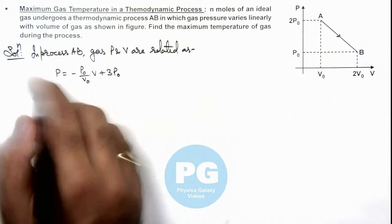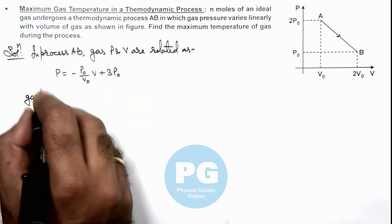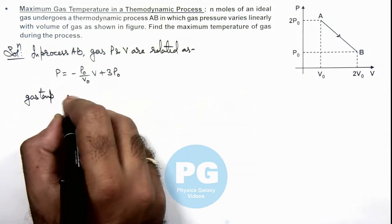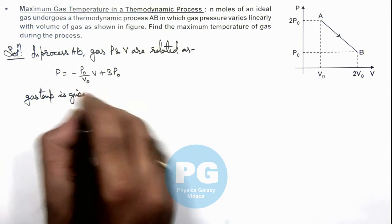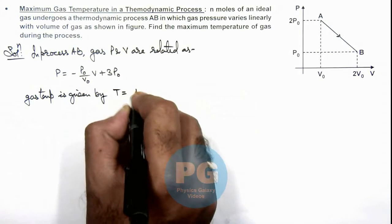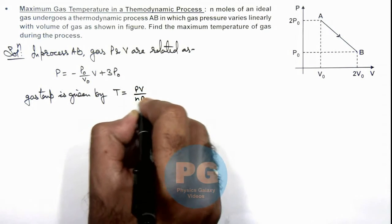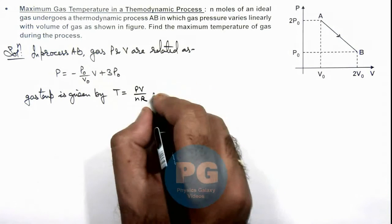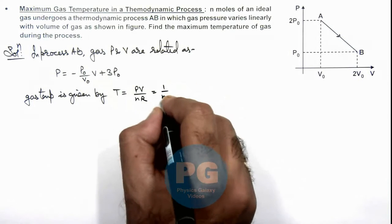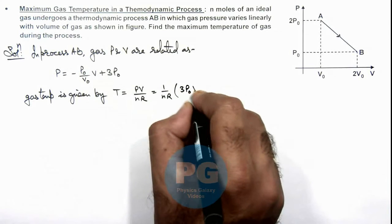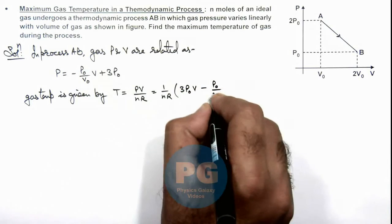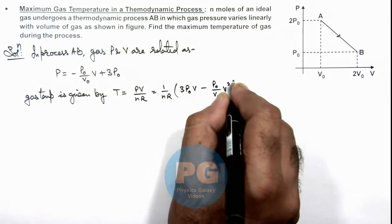The gas temperature is given by the gas law which is PV over nR. If we substitute the value of P, this is 1 by nR multiplied by (3P₀V minus P₀ by V₀ multiplied by V squared).